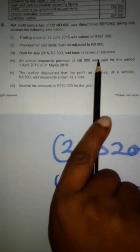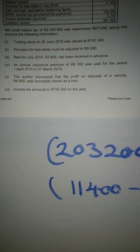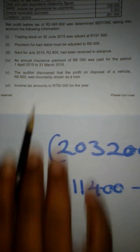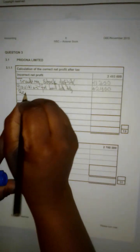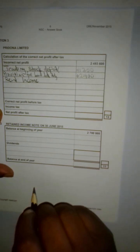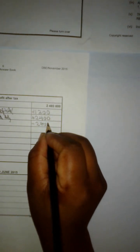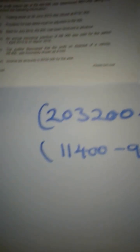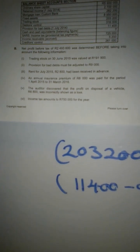Moving on to part three: rent for July 2015 of R2,800 has been received in advance. This is rent income received in advance. Whatever is in advance or prepaid, we subtract those amounts — so we indicate minus R2,800.